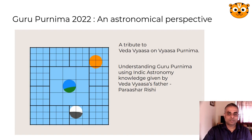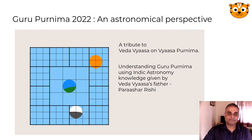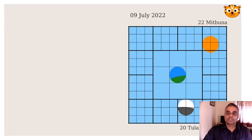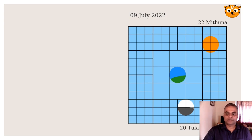Parashar Rashi was Veda Vyasa's father, who had composed a lot of knowledge. One of them is Parashara Horashastra. We are going to understand the astronomical perspective of Guru Purnima, and towards that, let us try to understand some of the planetary configurations through the past couple of days.